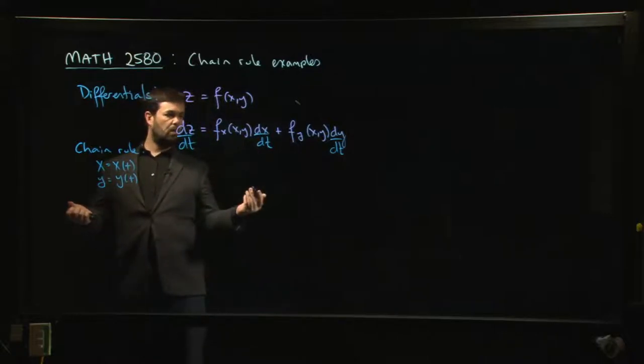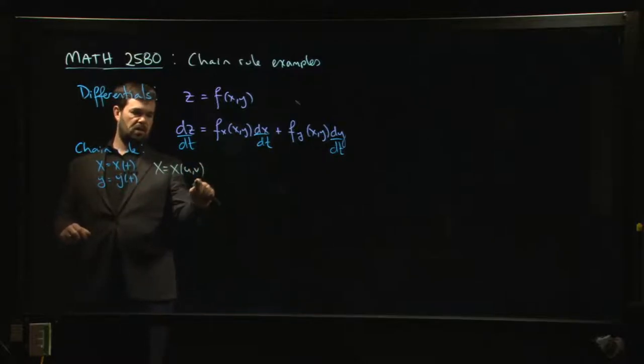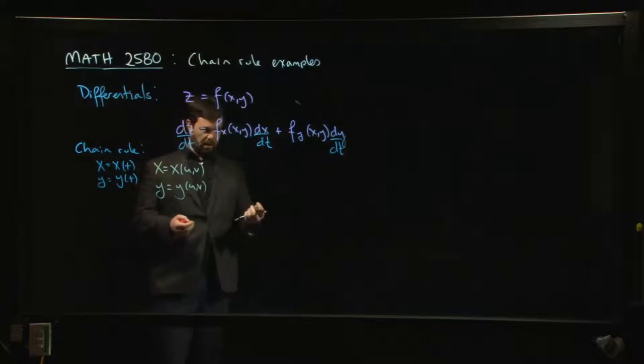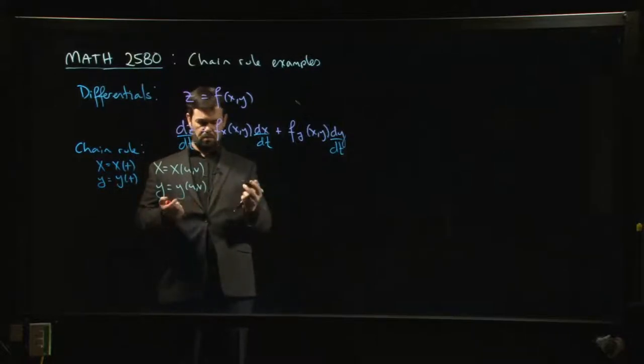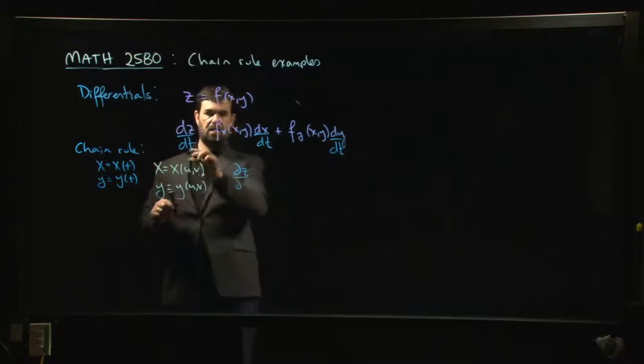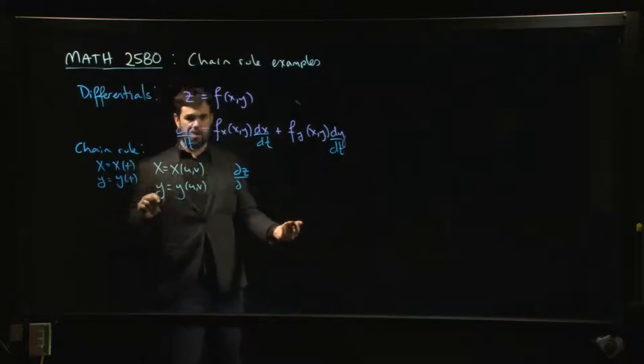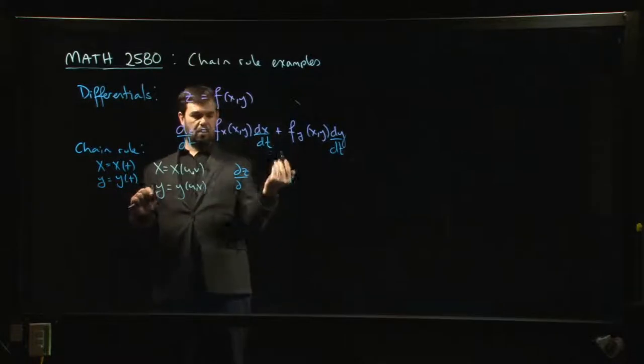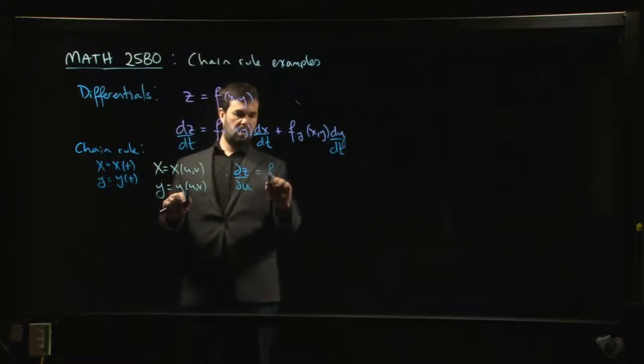What about if you're working with some of the other cases? Maybe x now depends on u and v, y depends on u and v. And I want to calculate my partial derivatives of z with respect to u and v. What does that look like? Pretty much the same thing. It's just that now z, since x and y both depend on u and v and z is defined as a function of x and y, through function composition z becomes a function of u and v. So instead of being a function of just one variable t, it depends on two things.